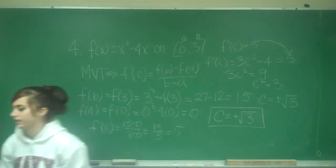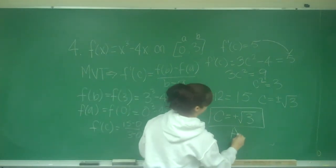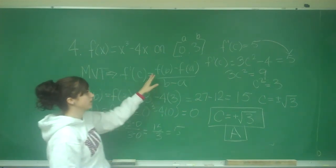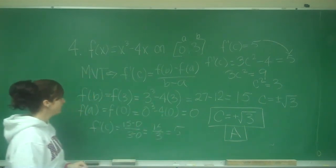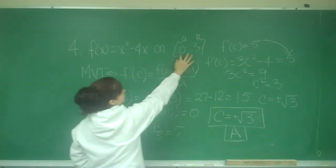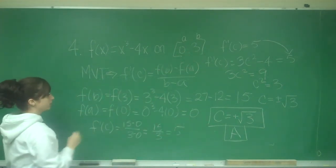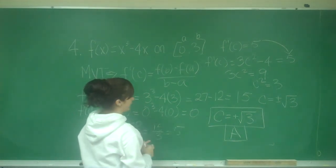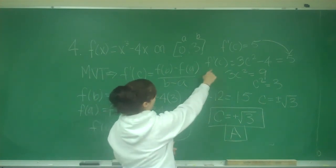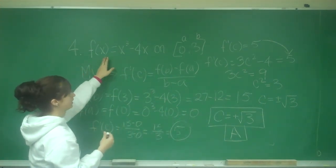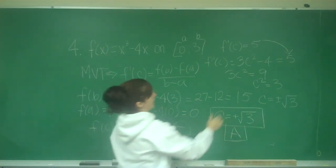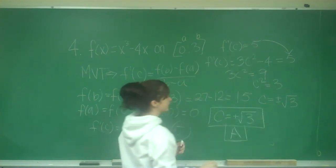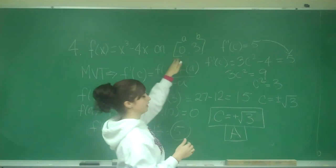And I believe that is choice A. To review: the Mean Value Theorem says f prime of C equals f of B minus f of A over B minus A. I find f of B and f of A from the original function using my interval endpoints, do f of B minus f of A over B minus A to get 5. Then I take f prime of C — replacing x with C to get 3C squared minus 4 — set it equal to 5, and solve for C. You also need to check that your answers are in your original interval.